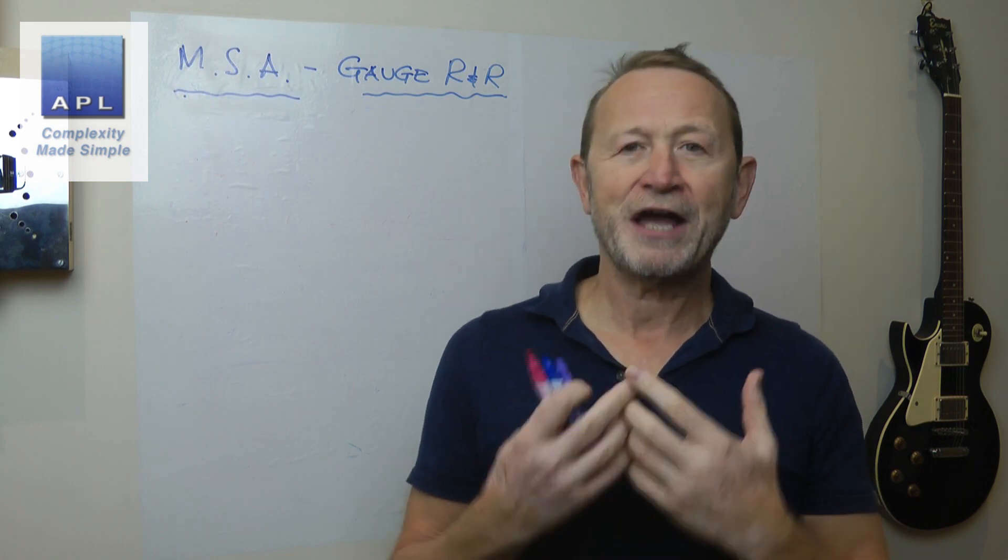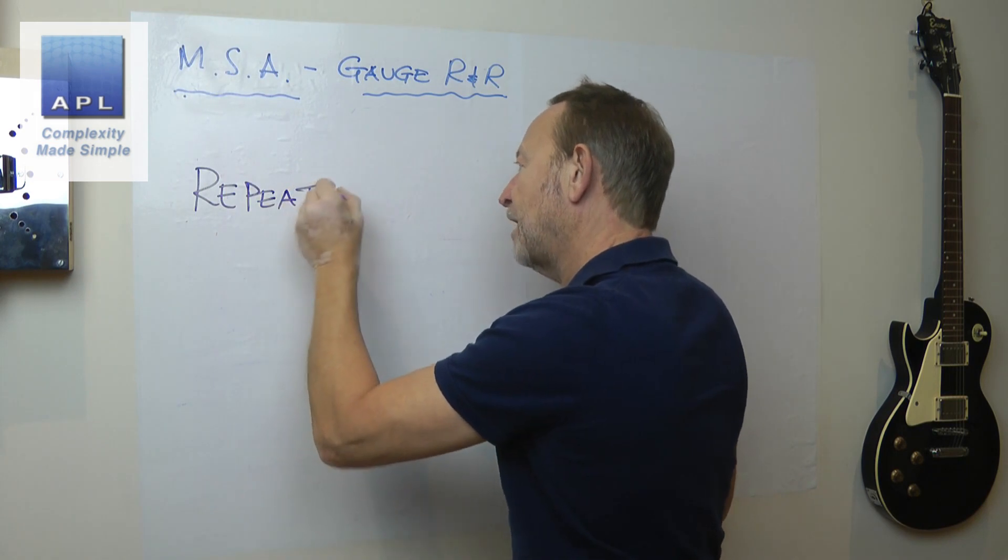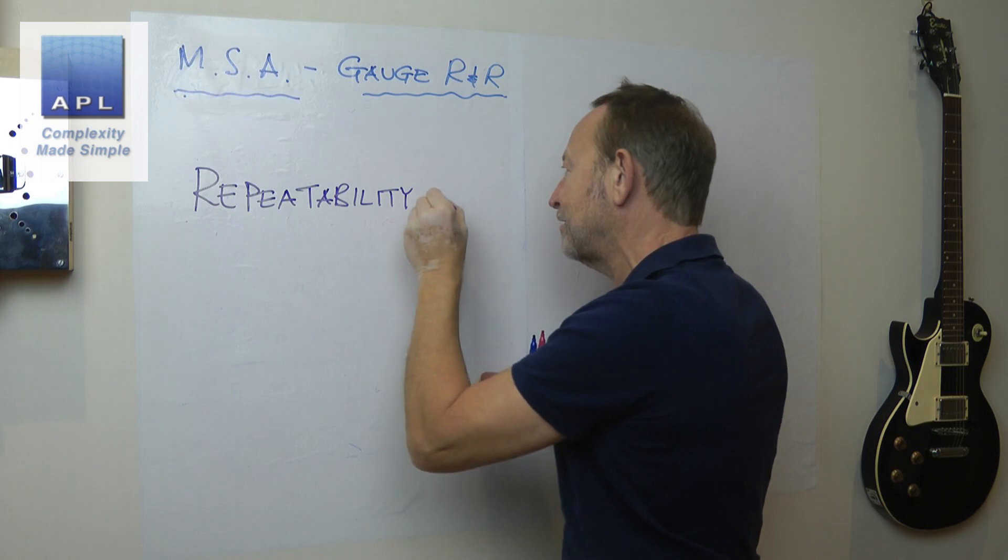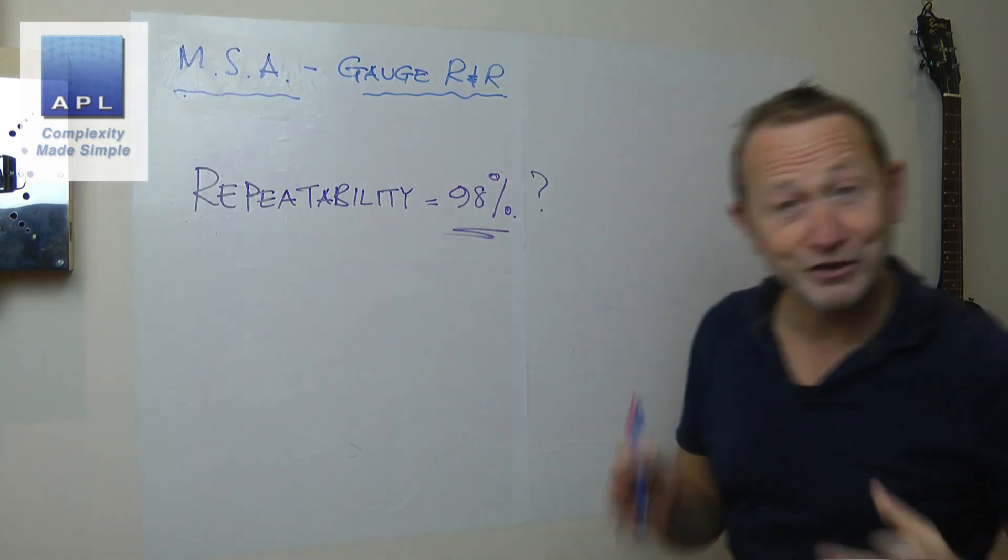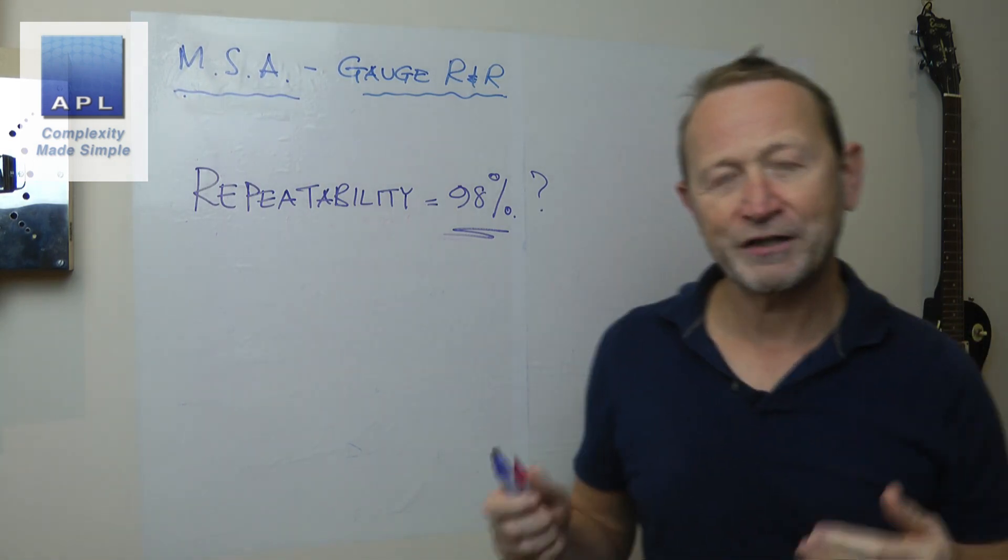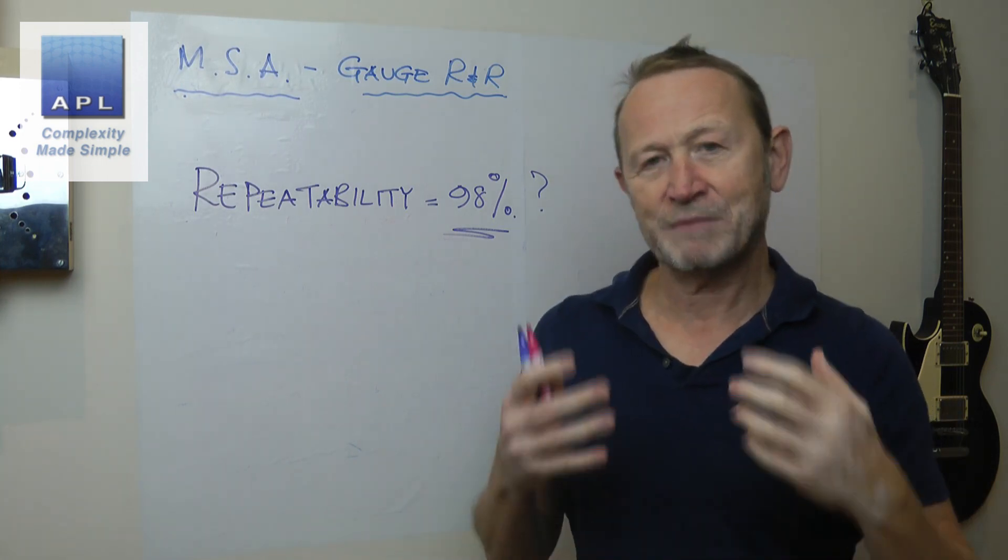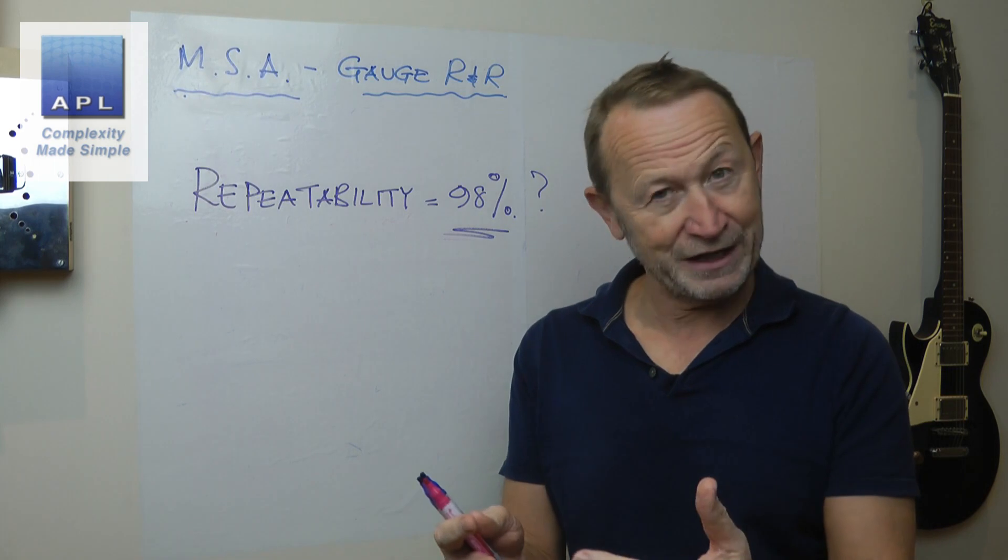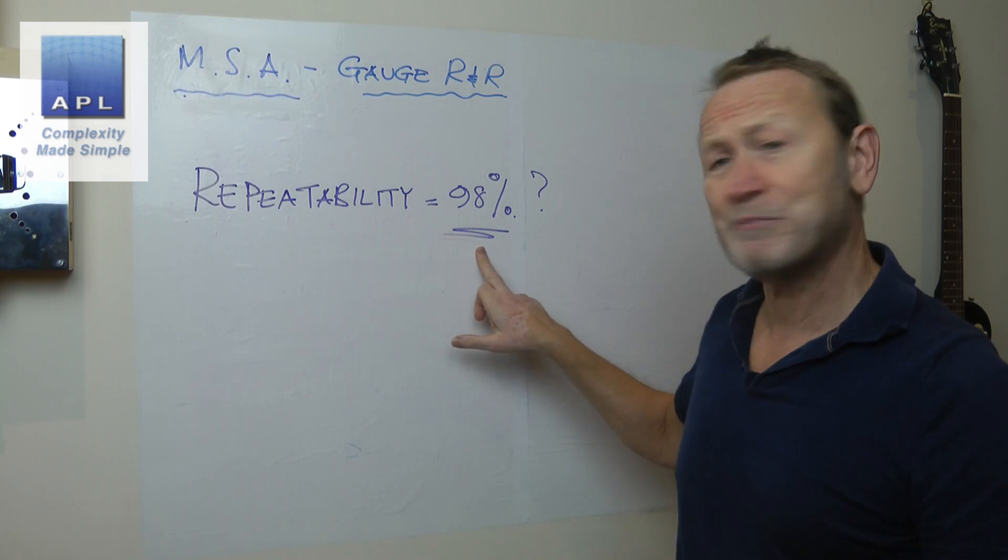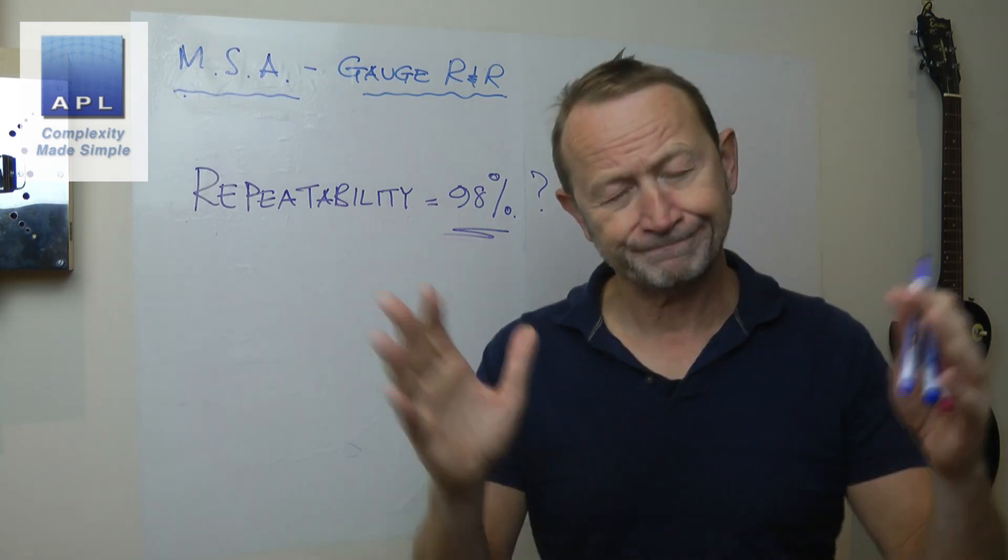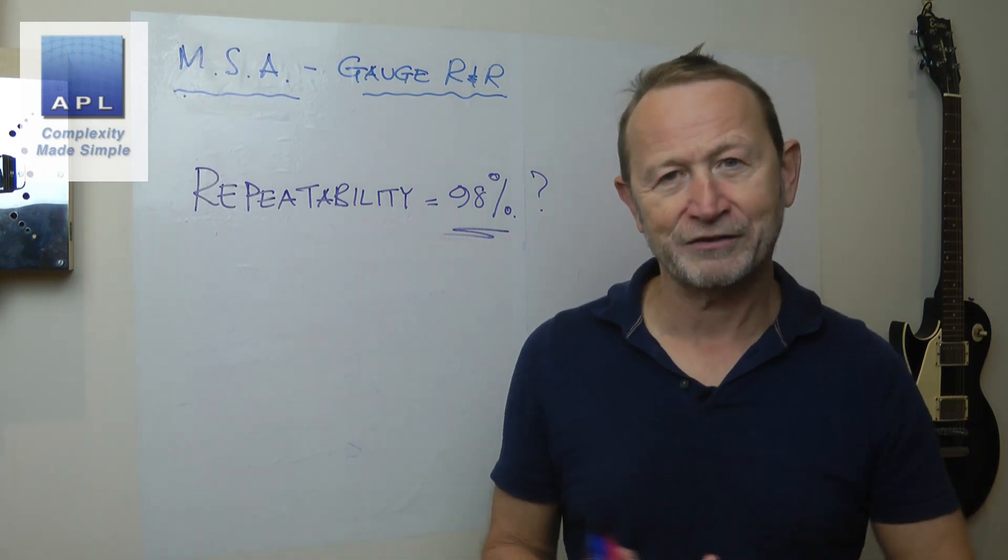So someone's sent me an email and what they've said is, help. I've got repeatability. I've done an MSA. And the variation coming from repeatability is 98%. Now people, when they do MSAs, I think they believe they're not going to see bad results. So people don't understand that the measurement system that they have has error in it, even though it's calibrated. And it could have a huge amount of error in it compared to what you're actually measuring.